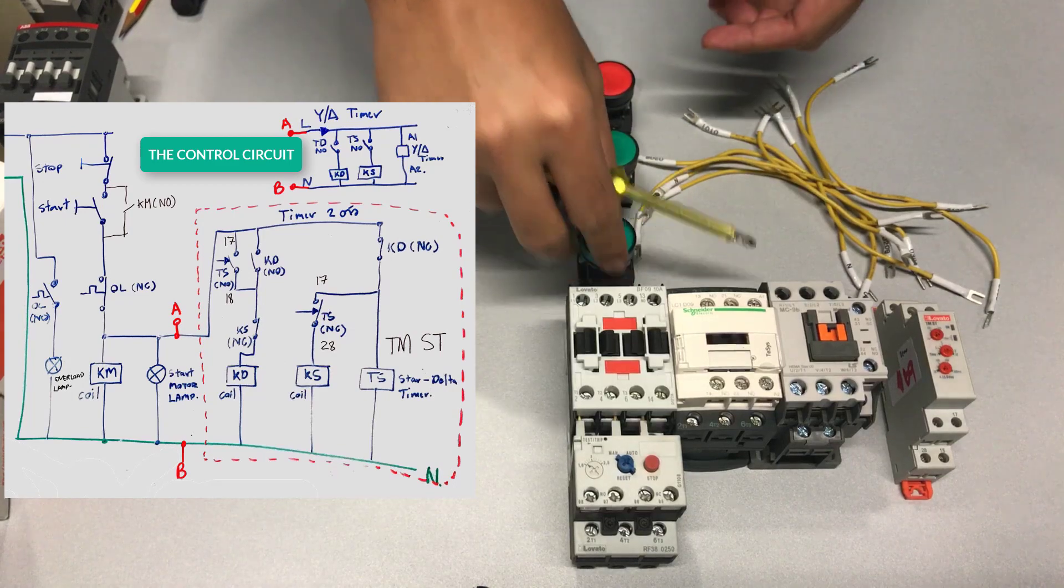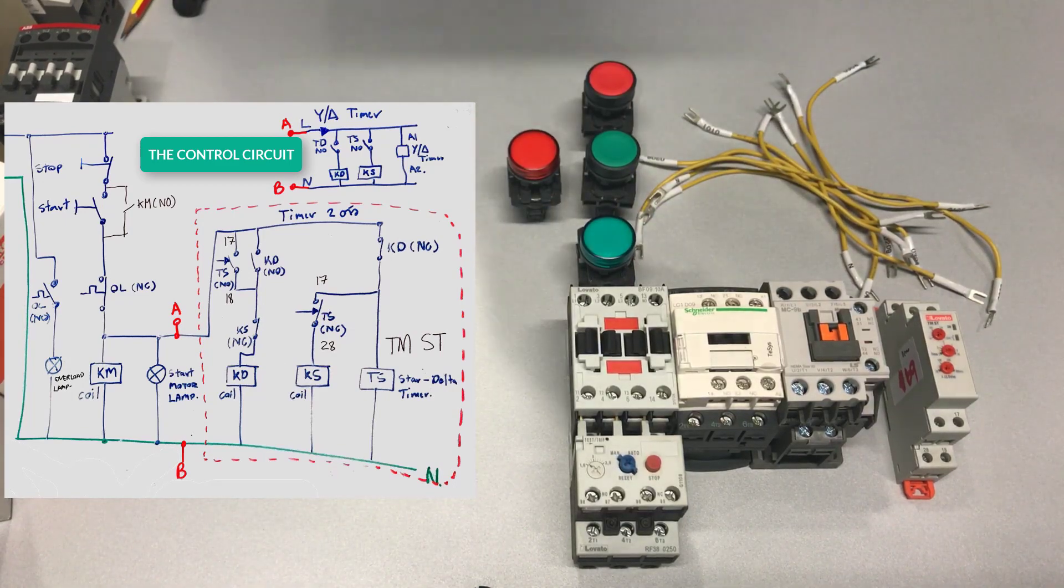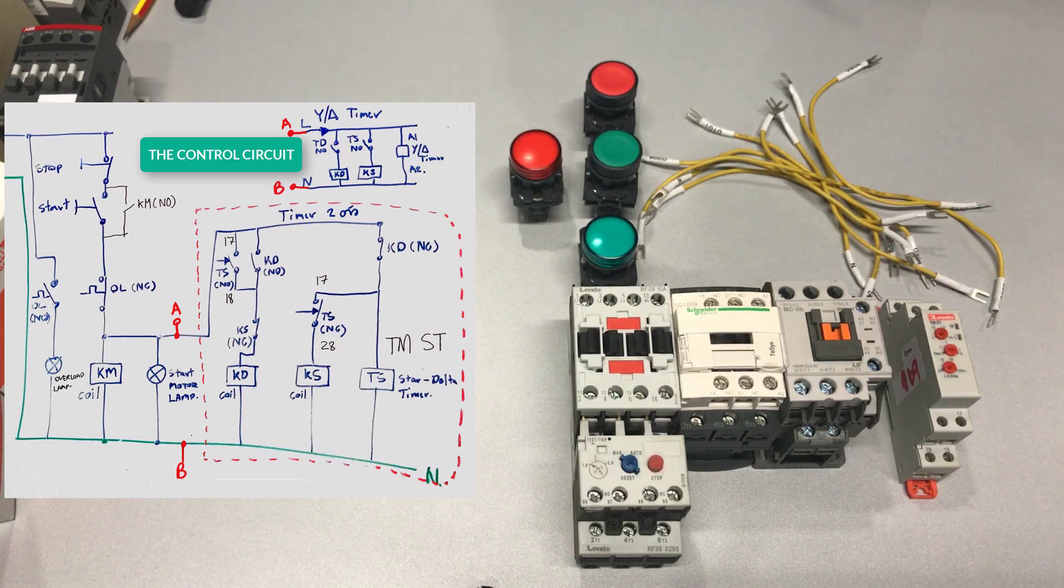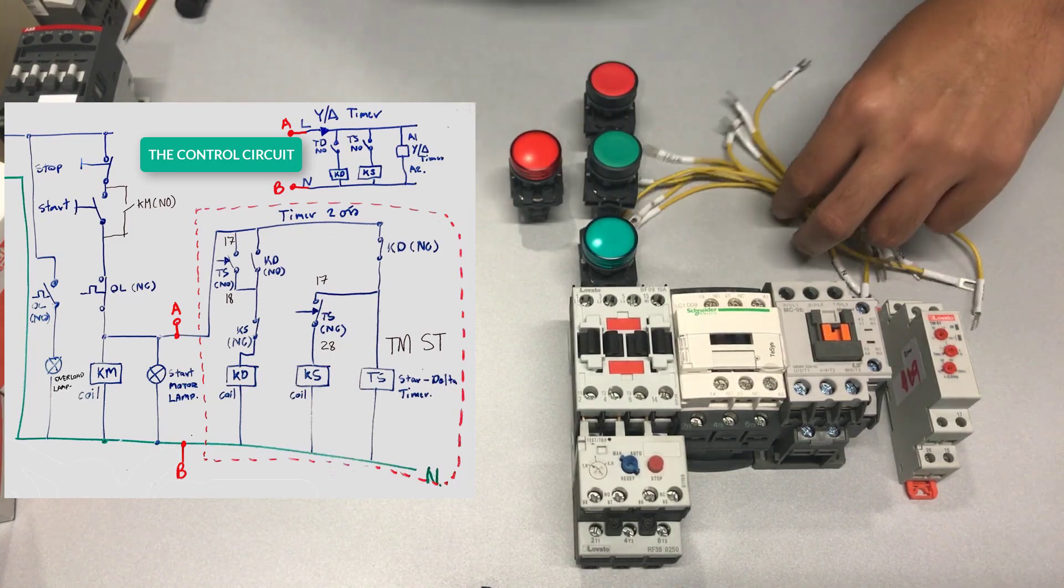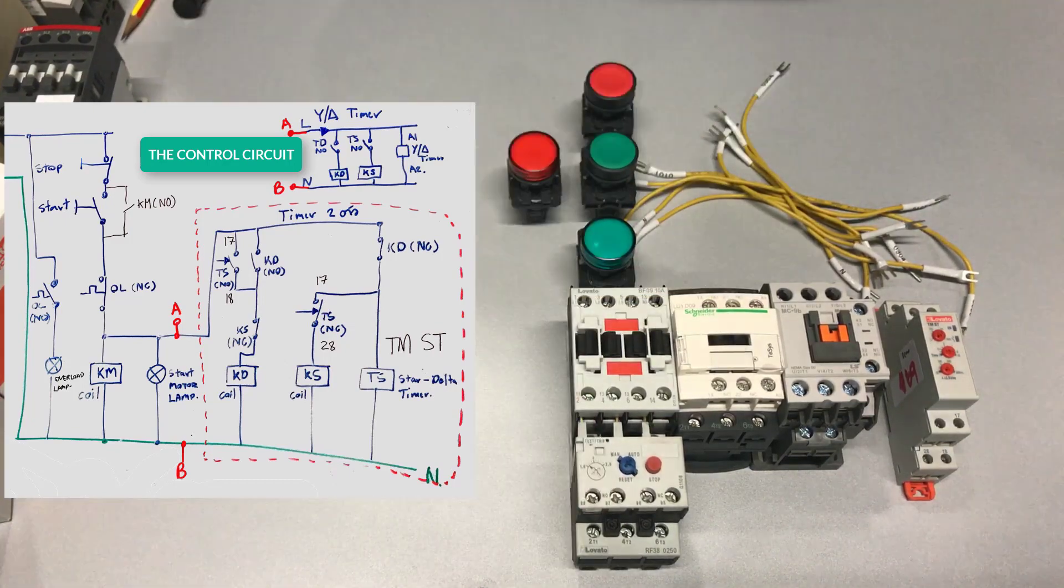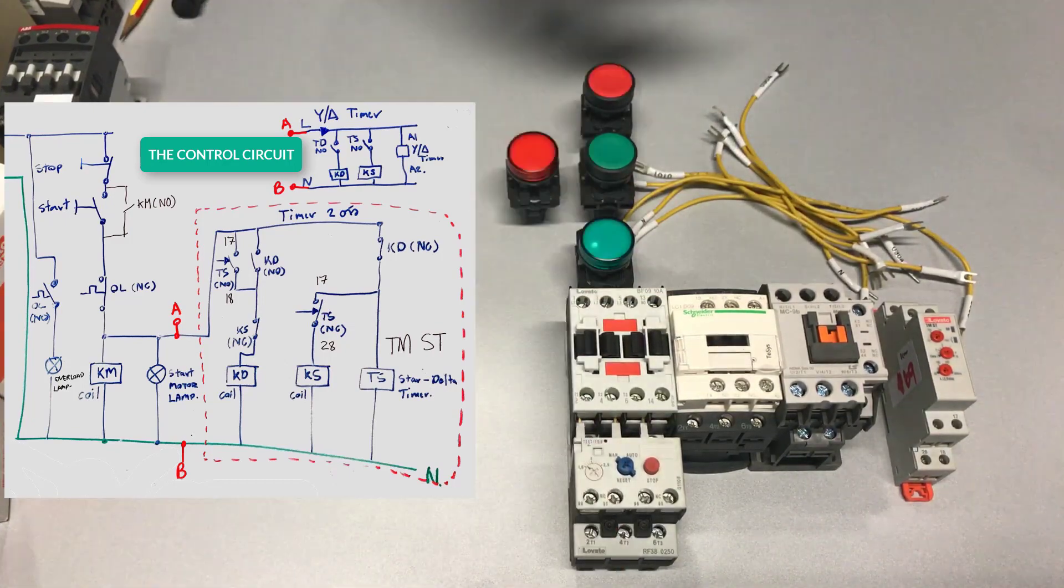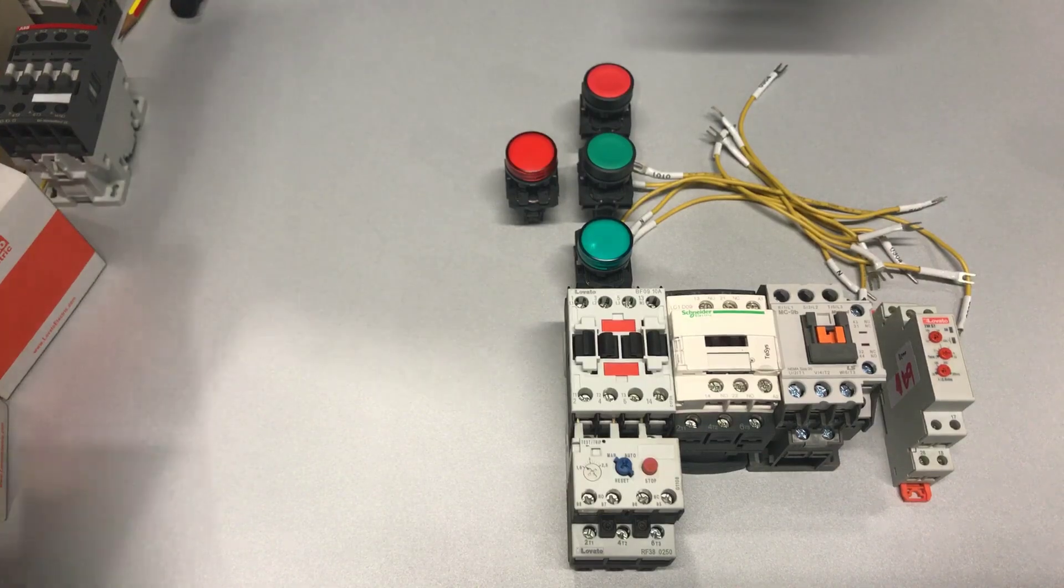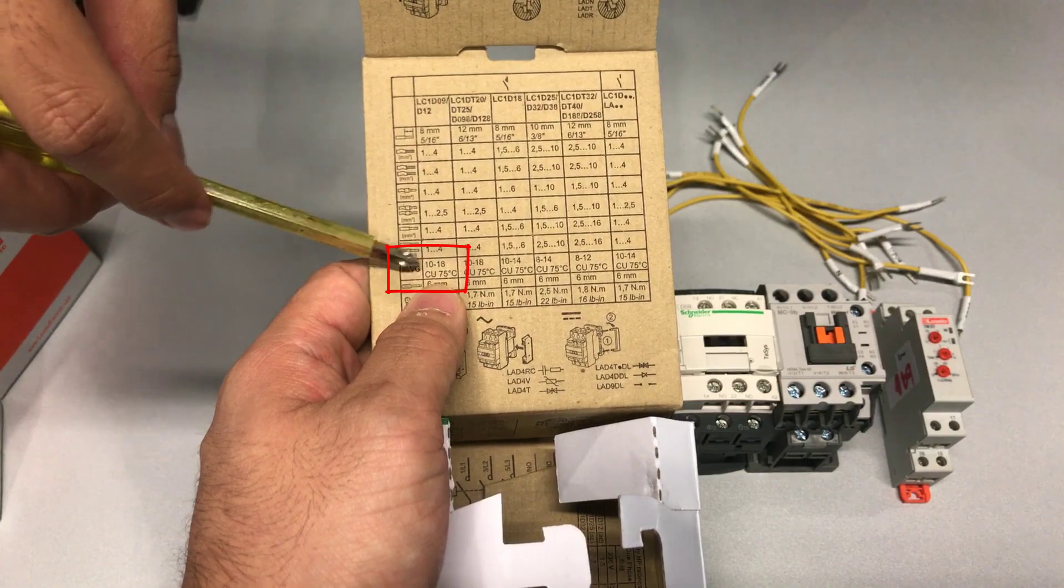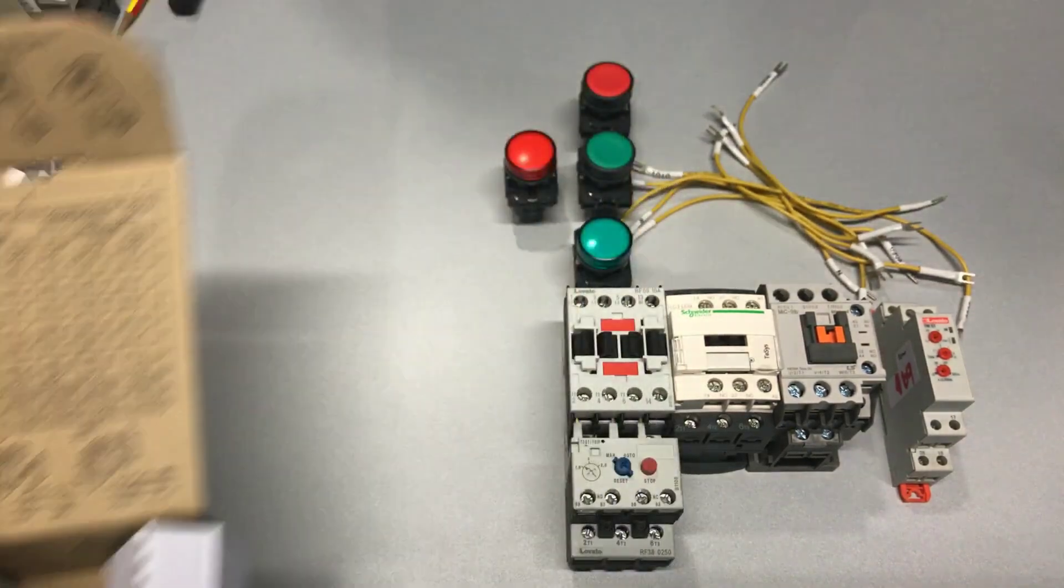To start the motor, we'll press the green button. To stop the motor, we'll use the red push button. On to other equipment. You will need cables. The right cable for this 9A contactor is recommended as AWG from 10 to 18, which is approximately 2.5mm2.